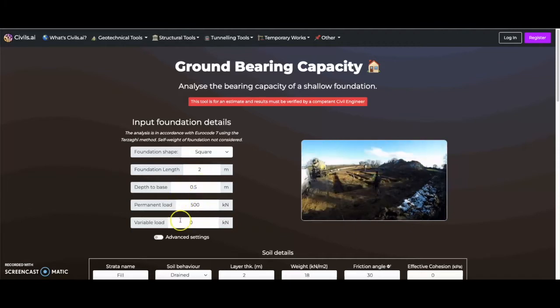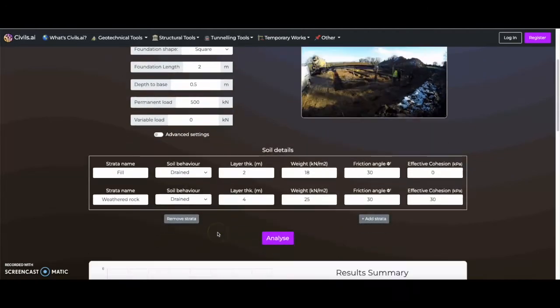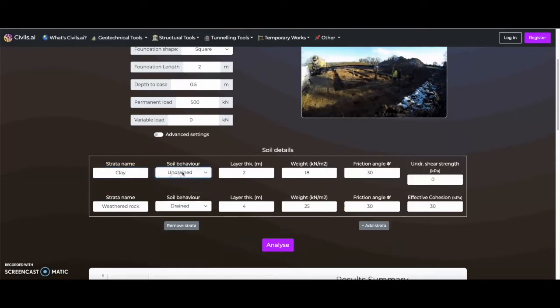There are also advanced features for users with more experience of the software. Beneath this, soil properties can be adjusted. Here you can adjust the soil layer name, control whether the soil behavior is drained or undrained. The thickness of the layer and soil properties can also be fine-tuned here.